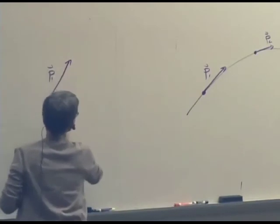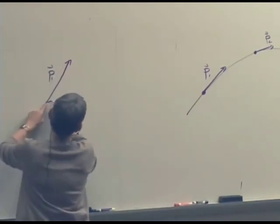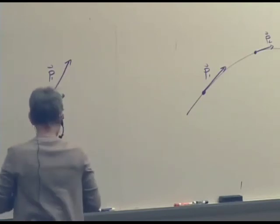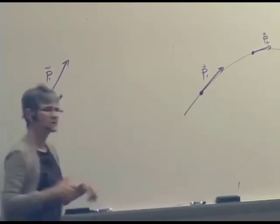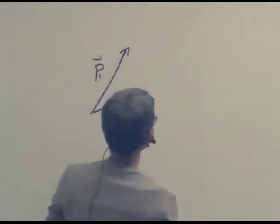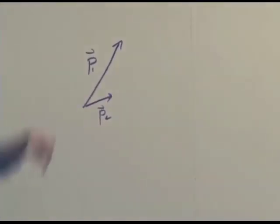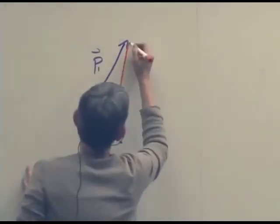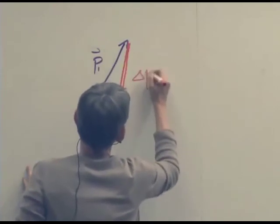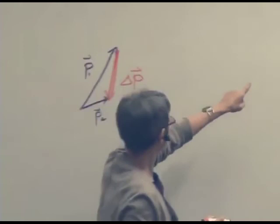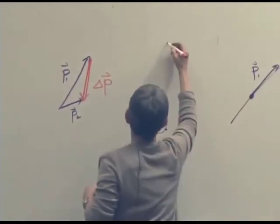Well, if the direction of the average net force here is the same as direction of ΔP, all we need to do is find ΔP. So we know how to subtract vectors. Here's P1. There's P2. ΔP is final minus initial. So it's P2 minus P1. So which way does ΔP go? Does it go that way or that way? Down.